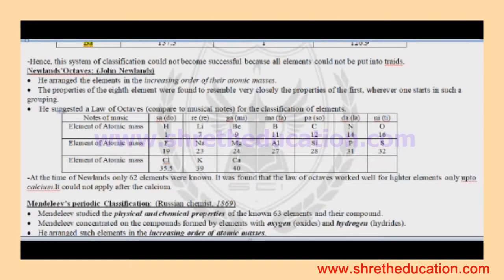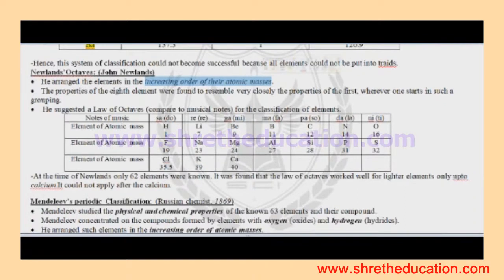John Newland arranged the elements in increasing order of the atomic mass. He arranged the elements in increasing order of the atomic mass.